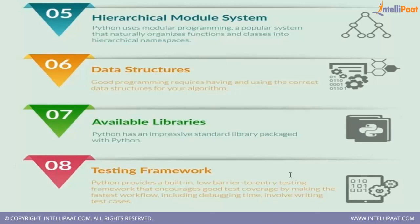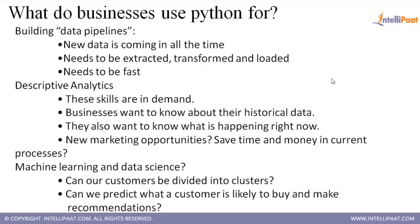What do businesses use Python for? The first one is building data pipelines. New data is coming in all the time — that is what we call big data. Data is coming from sources like Facebook or WhatsApp, or from machines that are constantly being monitored. That data needs to be extracted, transformed, and loaded. For that also Python is needed, and it has to be fast — not a lengthy cron job that runs overnight. Real-time data pipeline processing is required.